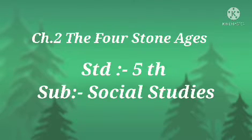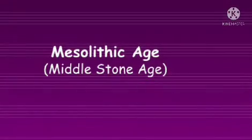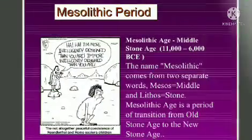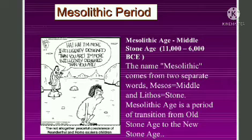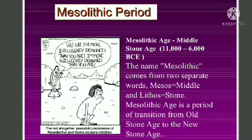The last one is the Chalcolithic age. We have already taken information about the primitive or Paleolithic age. Today we are going to start our second point — the Mesolithic or Middle Stone Age. The name Mesolithic comes from two separate words: 'mesos' means middle and 'lithos' means stone. The Mesolithic age is a period of transition from the old stone age to the new stone age.